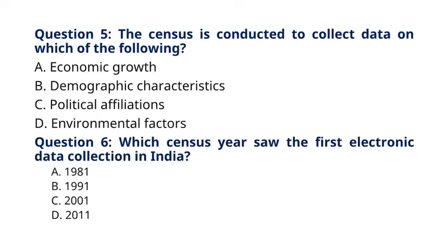Question 5: The census is conducted to collect data on which of the following? The correct answer to question 5 is option B: Demographic characteristics. Explanation: The primary purpose of the census is to gather demographic data such as population size, age distribution, sex ratio, etc.